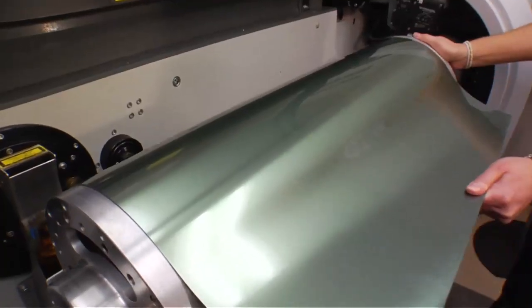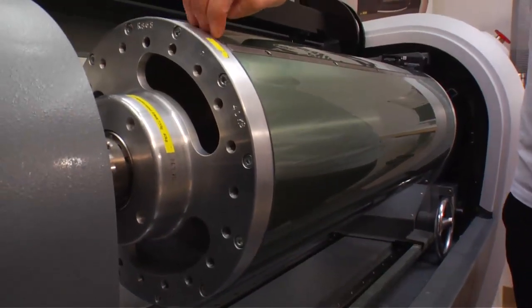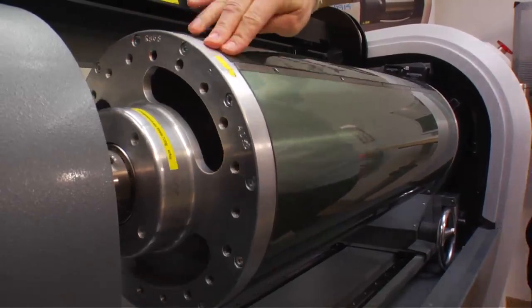This particular plate material is AVCE by Anderson & Vreeland. It has a metal back, and the drum inside the machine is actually magnetic to keep that plate in place.